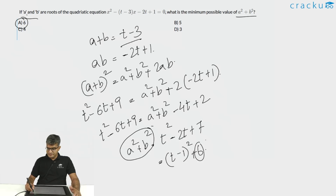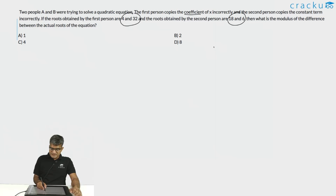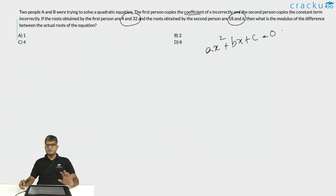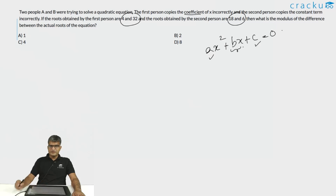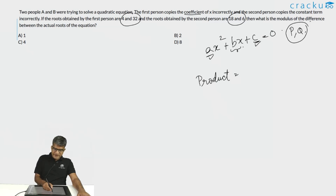Question 3: Two people A and B are trying to solve a quadratic equation. The first person copies the coefficient of x incorrectly, and the second copies the constant term incorrectly. The first person gets roots 4 and 32; the second gets roots 18 and 6. Assuming the equation is ax² + bx + c = 0, the first person got b wrong but c and a correct — so the product of the actual roots equals 4 × 32 = 128.